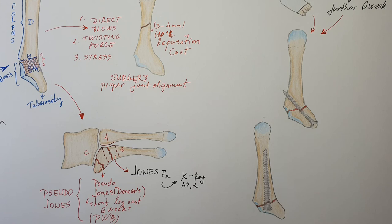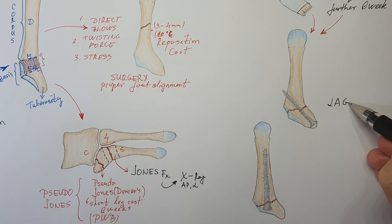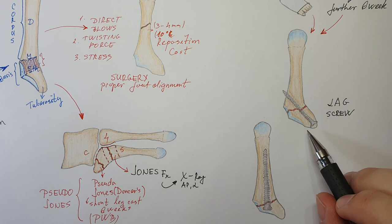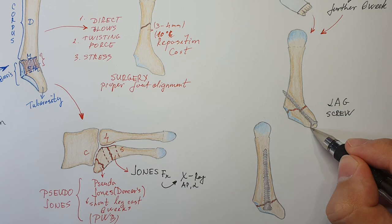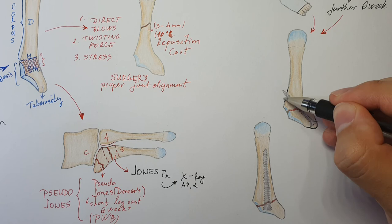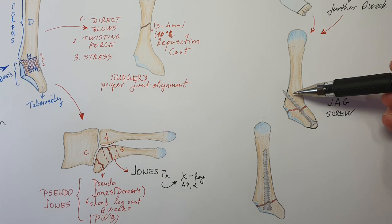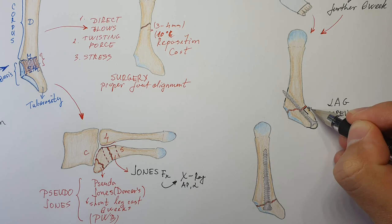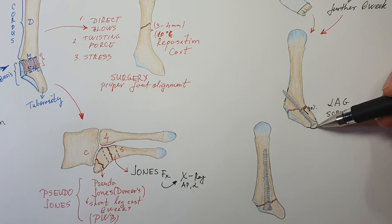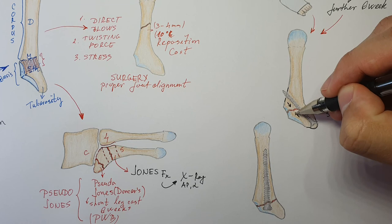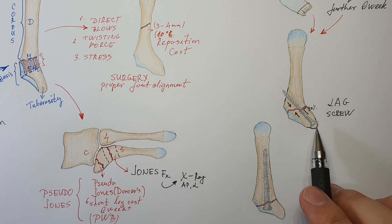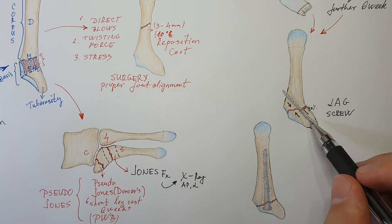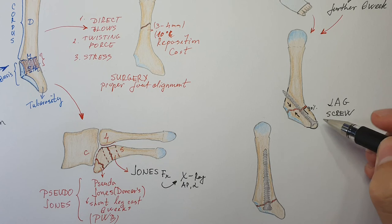There are two possibilities to treat this fracture operatively. One possibility is the so-called lag screw. The lag screw is put into the bone so that one part is in one part of the cortex and the other part is at the medial cortex of the bone — one at the lateral and one at the medial part of the cortex. It is inserted at a 90-degree angle with the fracture site. When you tighten this screw, you achieve interfragmentary compression, and this heals most of the time well. If the fracture line is not suited for this, the screw is inserted through the tuberosity, also called the styloid process.